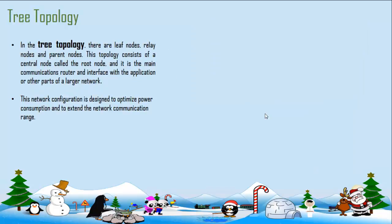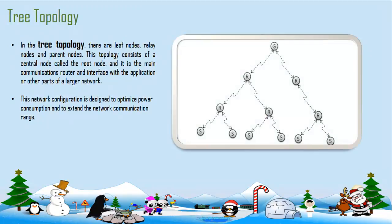Then we have tree topology as the name itself suggests that it's something like a tree. In this tree, we have at the top this as a root. And these at the bottom are called leaves. And these are called relays. So it's a distance one away from the root. This is called a relay. And what happens here is that these are meant for optimizing the power consumption or to extend the network communication range. And that's where the tree topology is useful.